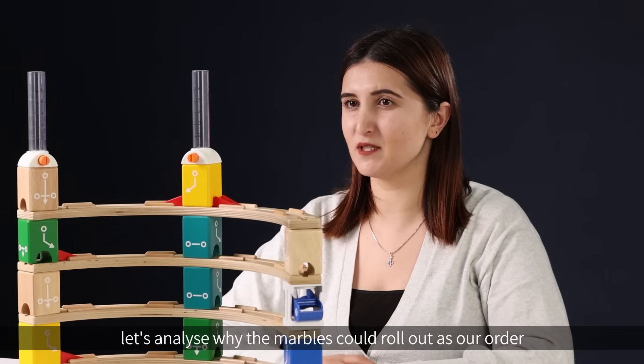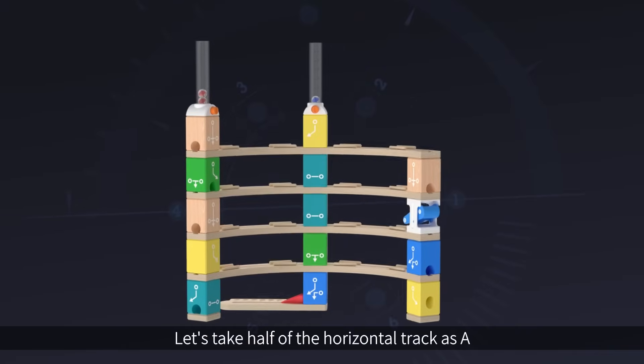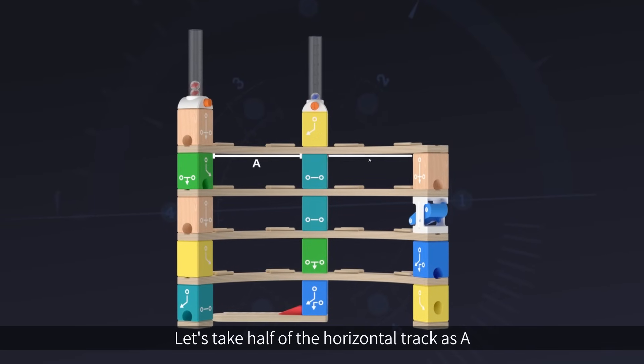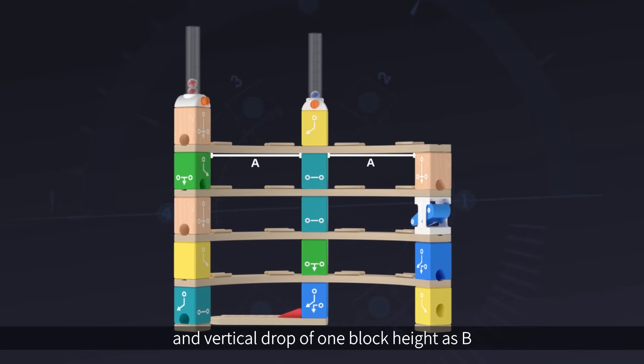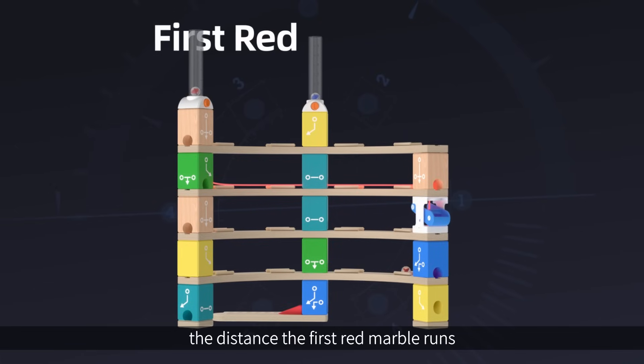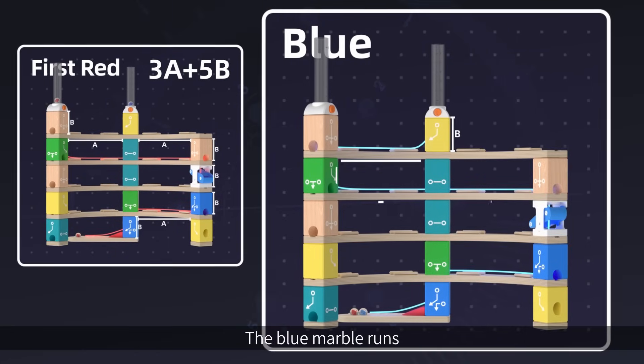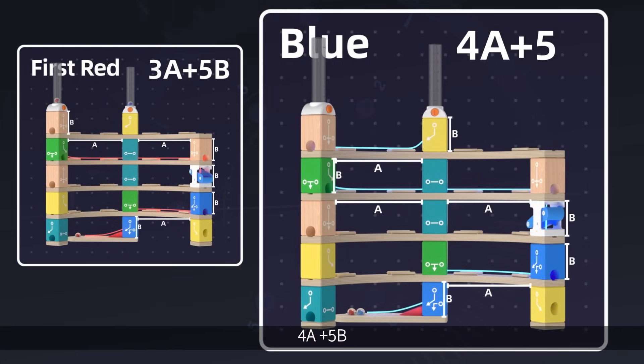let's analyze why the marbles could roll out as our order. Let's take half of the horizontal track as A and vertical drop of one block height as B. According to this logic, the distance the first red marble runs is 3A plus 5B. The blue marble runs 4A plus 5B.